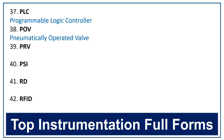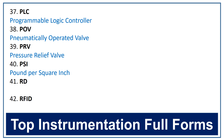PRV. The full form of PRV is pressure relief valve. PSI. The full form of PSI is pound per square inch. RD. The full form of RD is rupture disc.